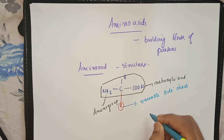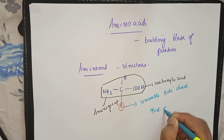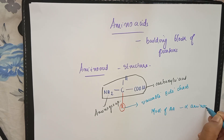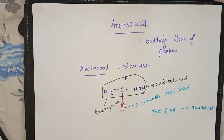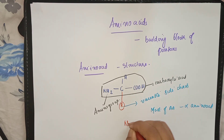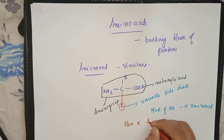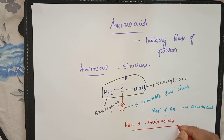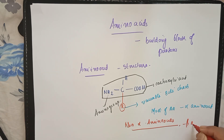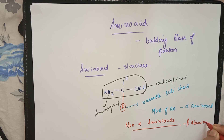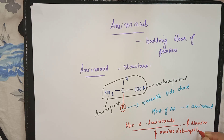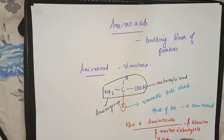Most amino acids are alpha amino acids. The non-alpha amino acids include beta-alanine, beta-amino isobutyrate, and gamma-amino isobutyrate.